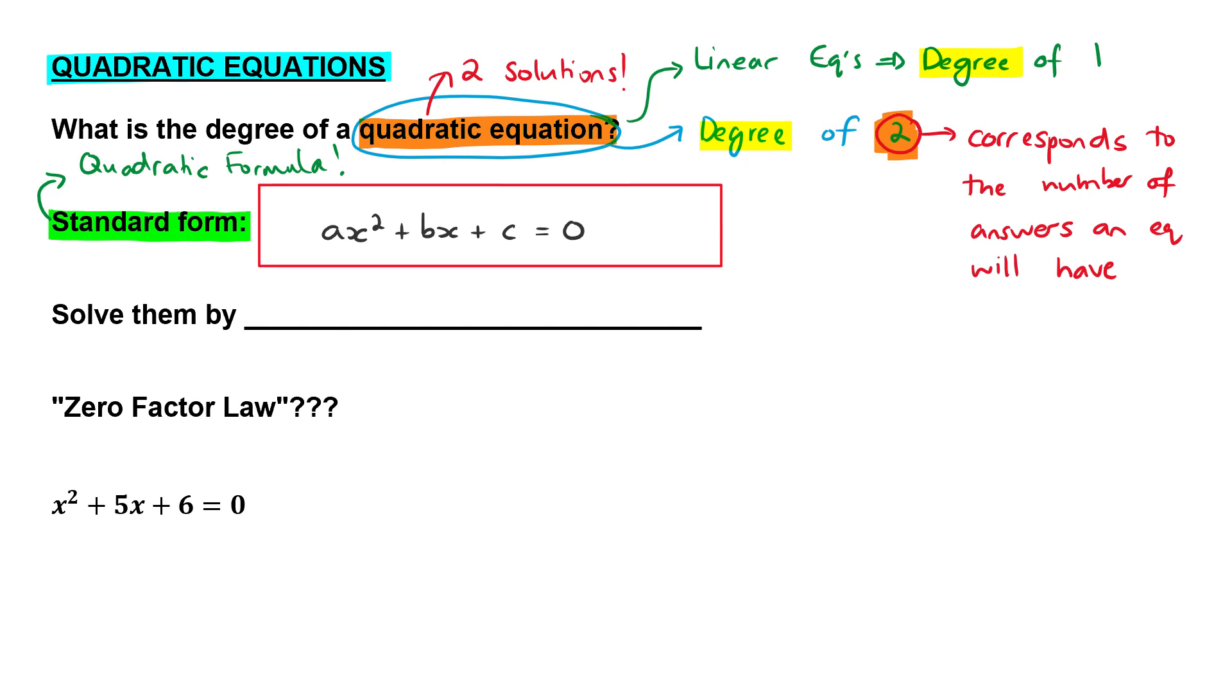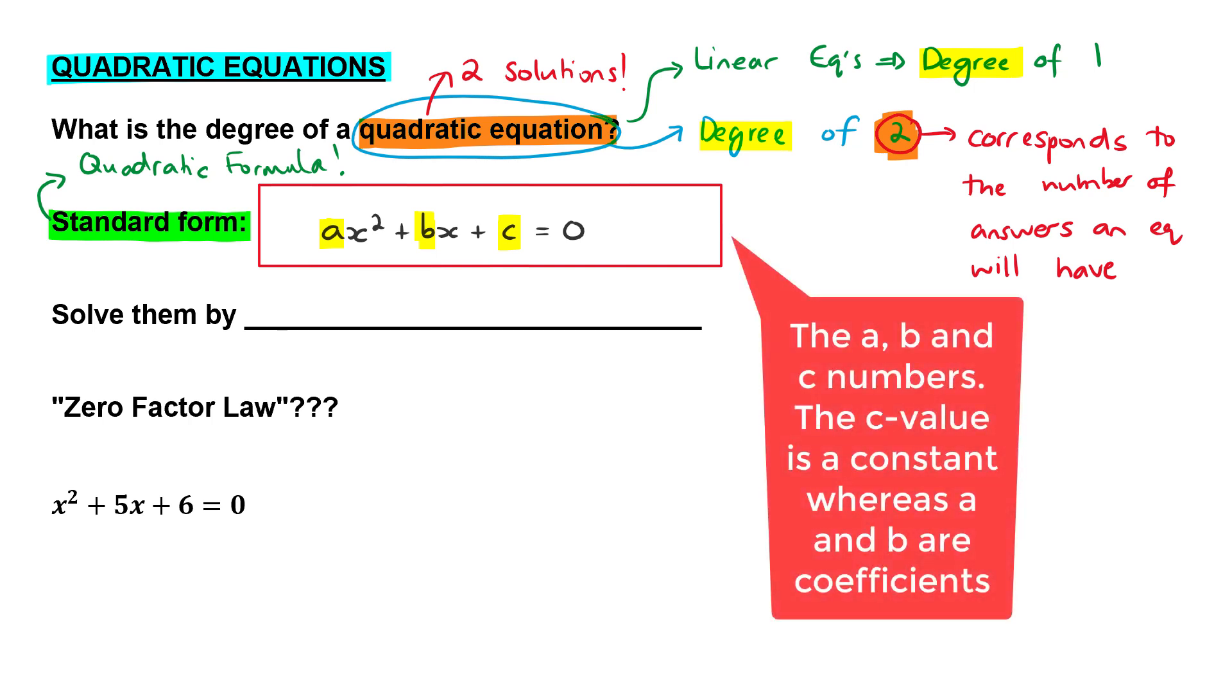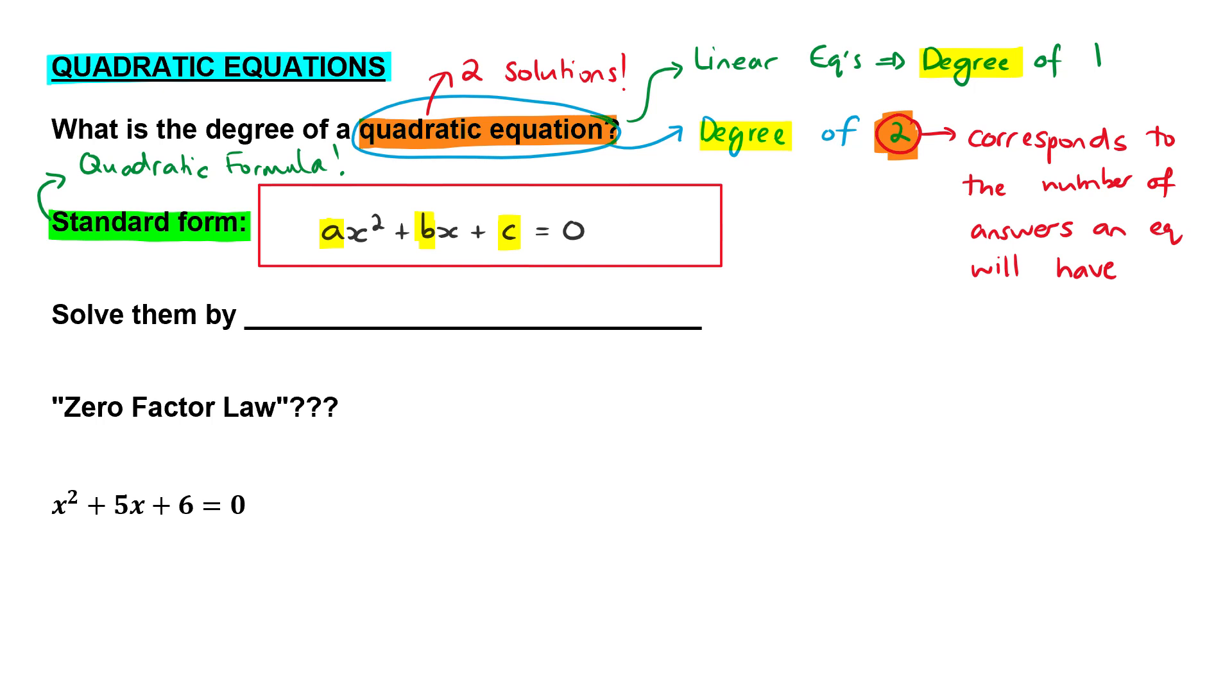And what you see here is that the a, b and c, well those are just numbers, those are just coefficients of x. Now the reason that this standard form is so important is that you can't solve a quadratic equation if you don't write it in the standard form first.